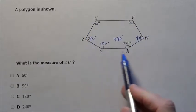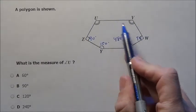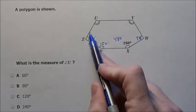Well, how many degrees does this shape have to add up to? Well, let's count the number of sides, 1, 2, 3, 4, 5, 6, 6 sides.